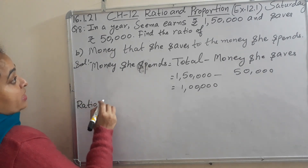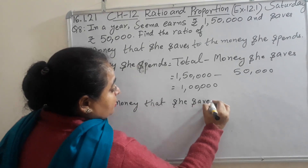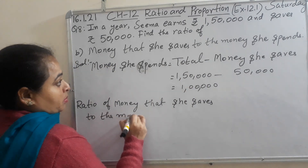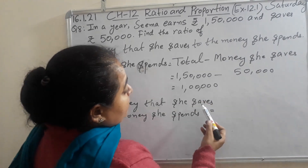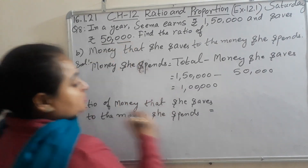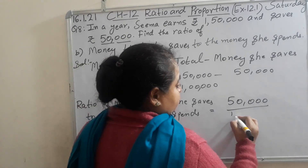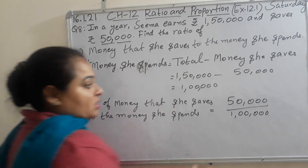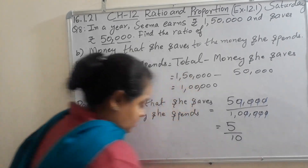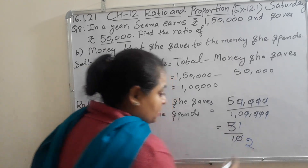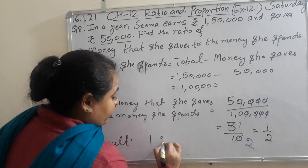Now, ratio of money that she saves to the money she spends is equal to saved money over money spent. Do the cancellation: 5 upon 10. Further cancellation in the table of 5 — 5 ones are 5, 5 twos are 10. So, this is equal to 1 by 2. In the result, you will write 1 ratio 2.